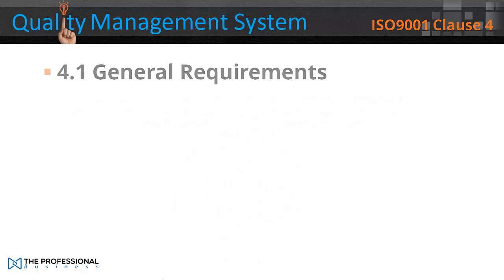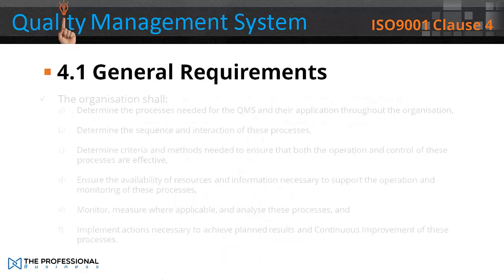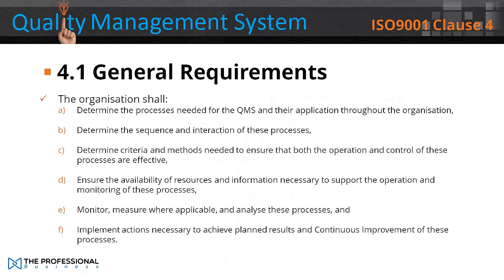4.1 General Requirements — the organisation shall: a) Determine the processes needed for a QMS and their application throughout the organisation; b) Determine the sequence and interaction of these processes; c) Determine the criteria and methods needed to ensure that both the operation and control of these processes are effective.